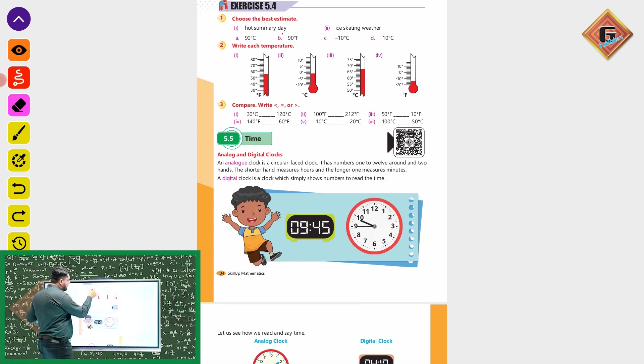Ice skating weather - ice skating weather, we will see ice. Zero from below, this is minus 10 degree centigrade.